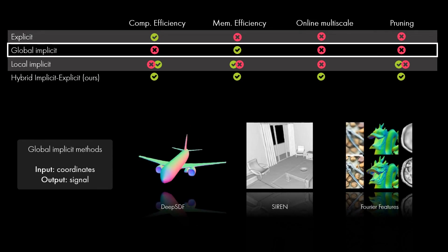Coordinate-based networks, also called implicit representations, do not operate directly on a grid, but use a network that takes coordinates as input and then regresses the signal of interest. SIREN, or networks with Fourier features such as ReLU with positional encoding, fall into this category. These representations have also been shown to have compressive properties in terms of the number of trainable parameters required to represent large-scale signals. Thus, they are memory efficient, but querying each coordinate requires an entire forward pass through a neural network.